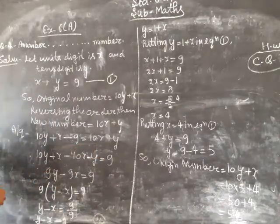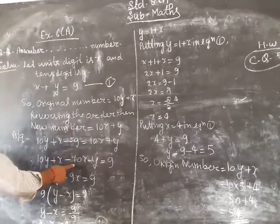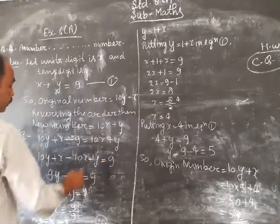Transferring terms, we have 10y plus x, then 10x transfers to minus 10x, y transfers to minus y, minus 9 transfers to plus 9.